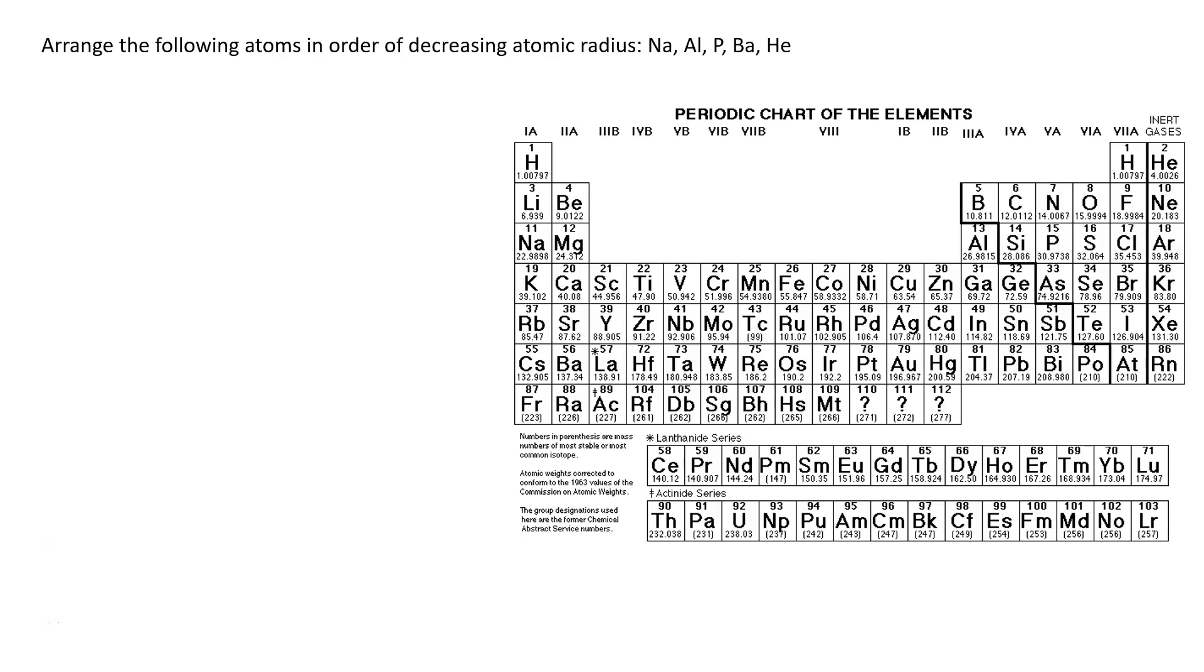Hi everyone, we're going to practice some of our periodic trends in this video. In our first example they want us to arrange these atoms in order of decreasing atomic radius or from biggest to smallest.